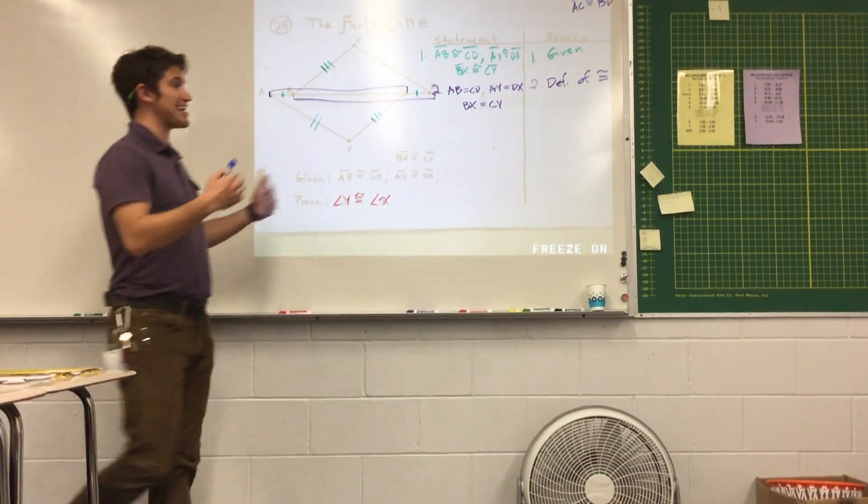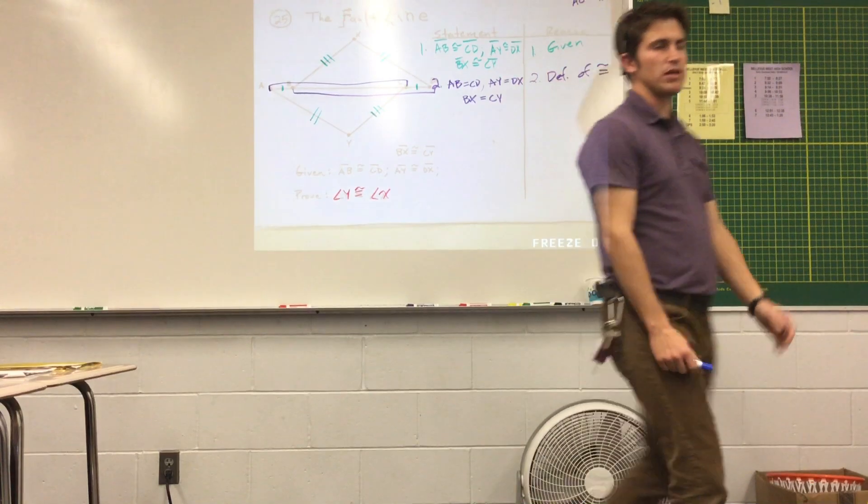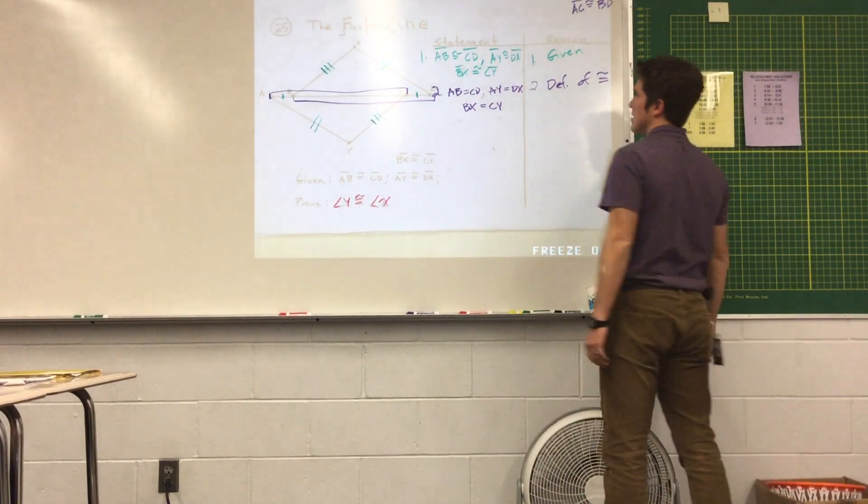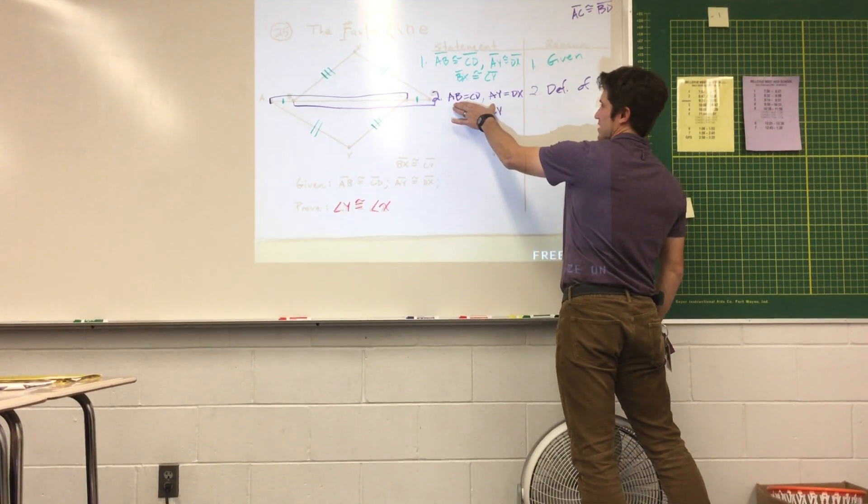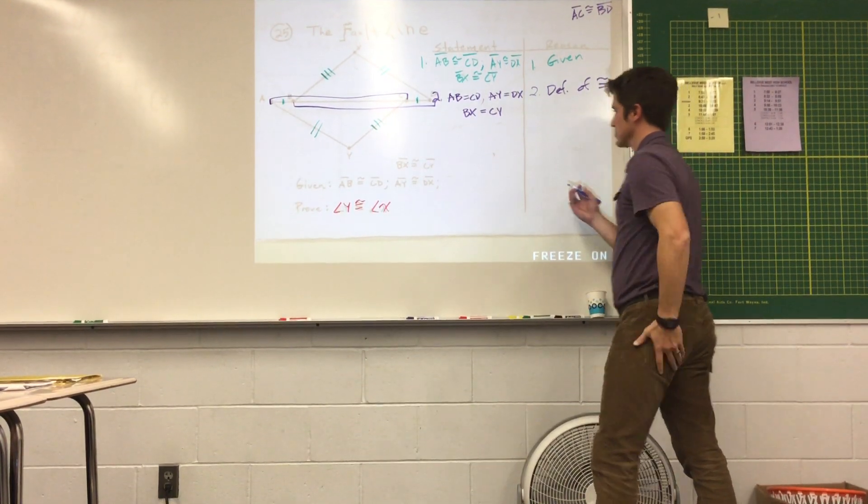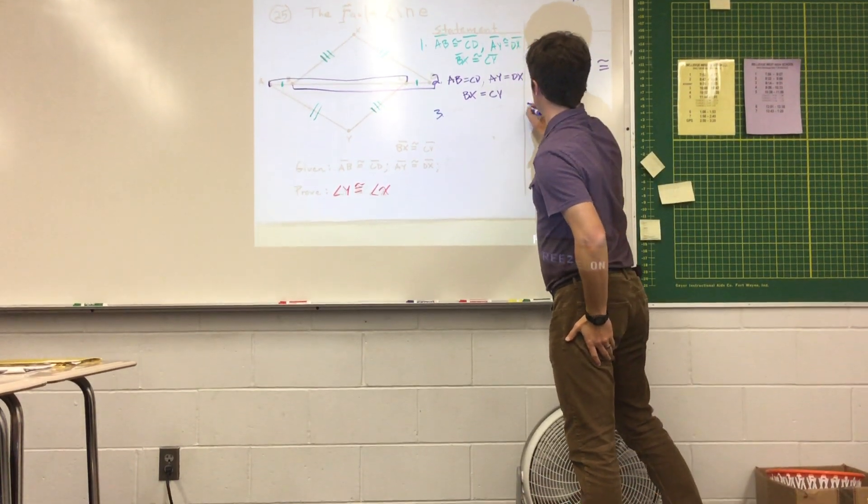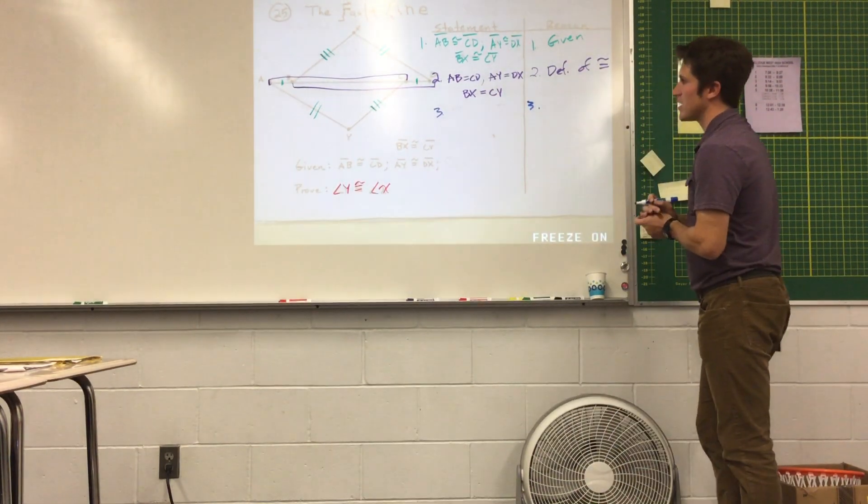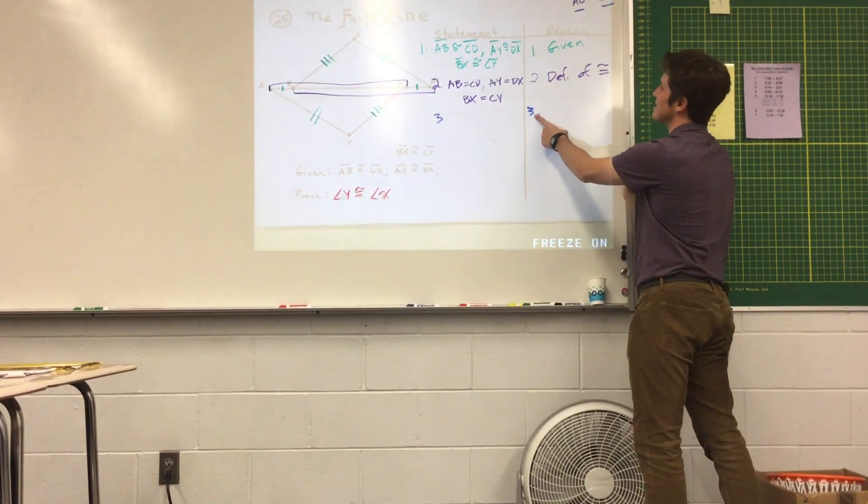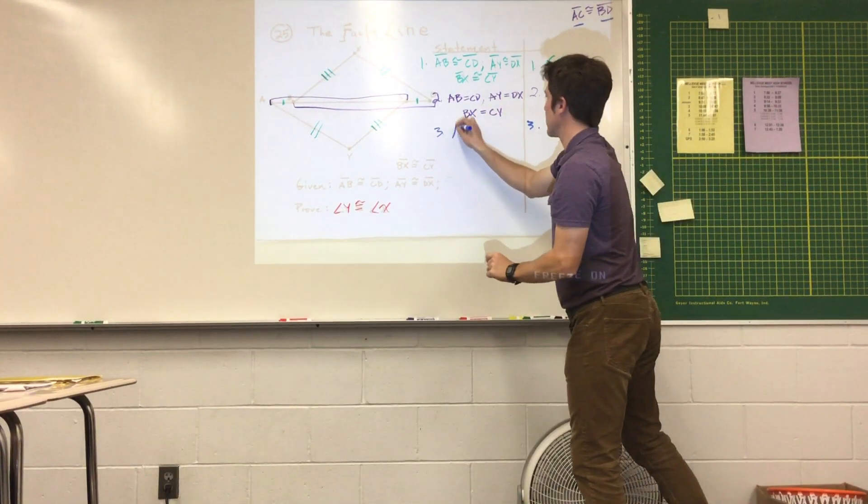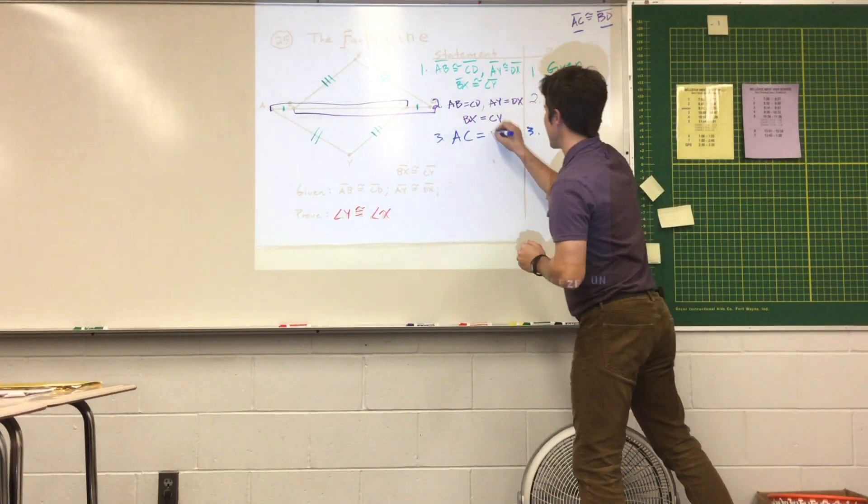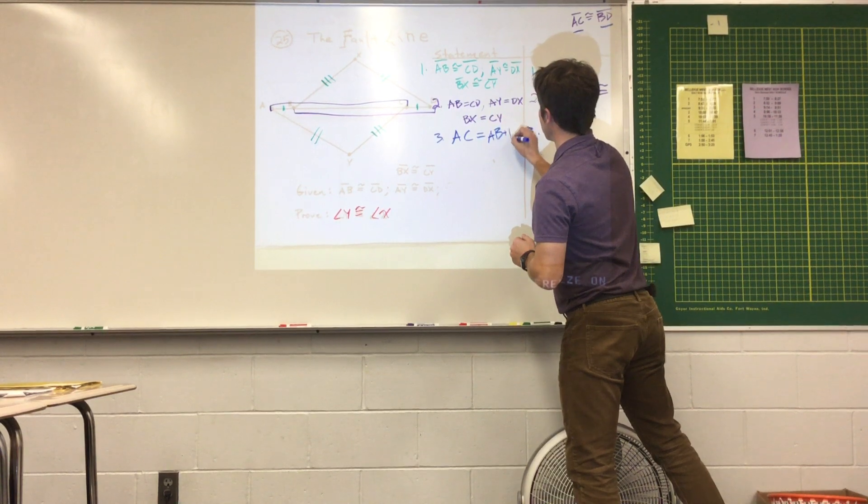We know ahead of time that we're going to have to use segment addition postulate. And when we start adding segments together, we like talking about their lengths. We don't like talking about congruence as much. So, let's talk about segment addition here. Remember our goal is to talk about AC and BD. So let's think about AC. It's made up of two parts. What two parts? AB and BC.